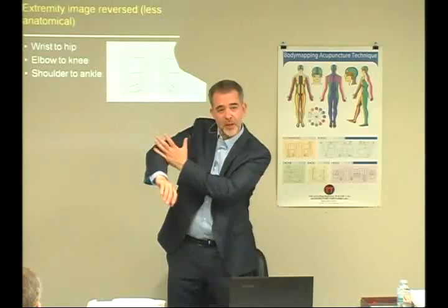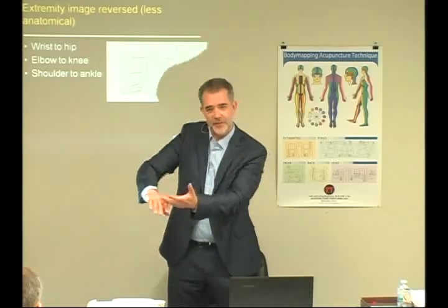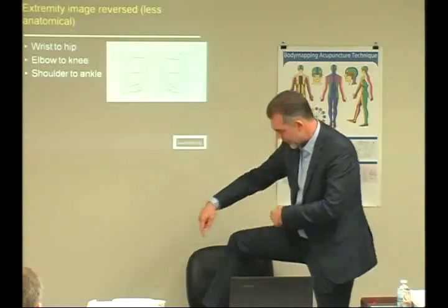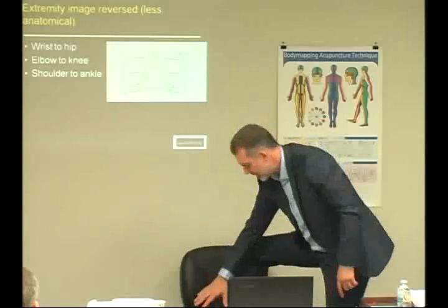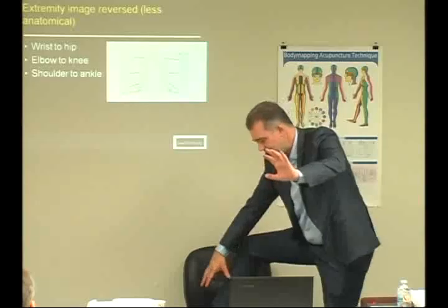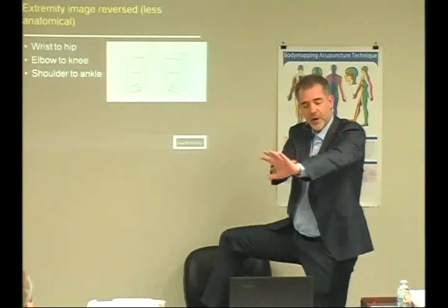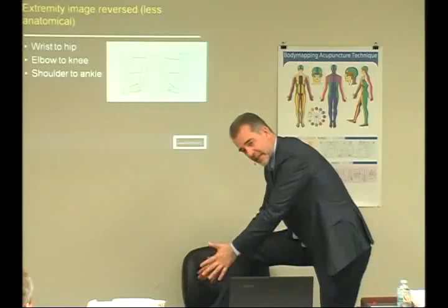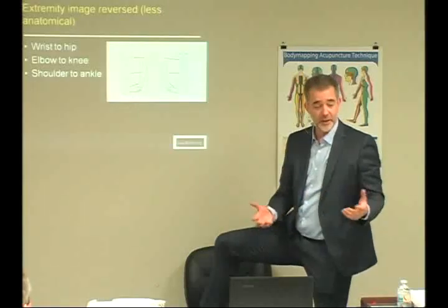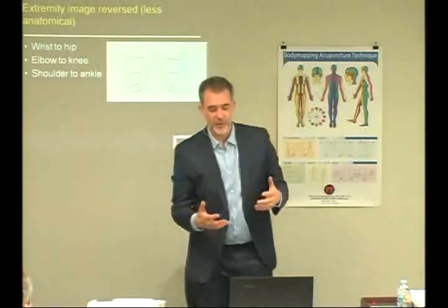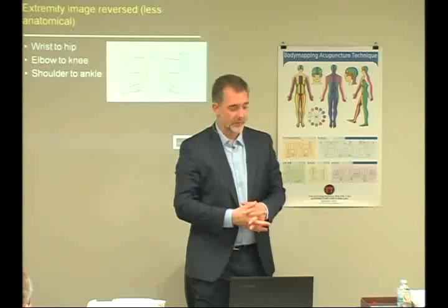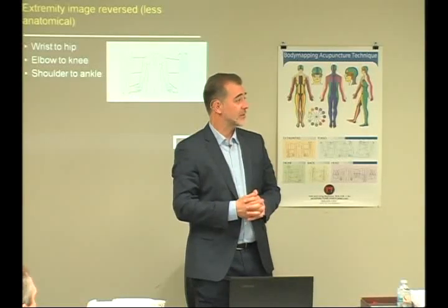We can treat everything from the elbow down because you can just reverse the image. The same works on the leg—first joint, second joint, third joint—that first and third can reverse. So ankle was treating wrist, but reversed, ankle now treats shoulder. No matter where the problem is, we can do everything from the knee down, which makes it beautiful for people sitting in chairs, public health settings, group acupuncture, and community acupuncture. This technique works well since we can reverse images and get everything distally without de-clothing everybody.